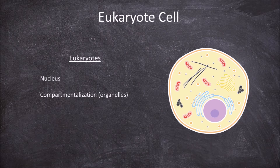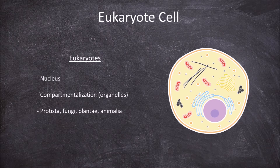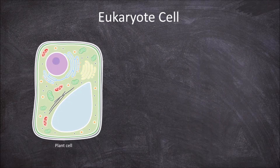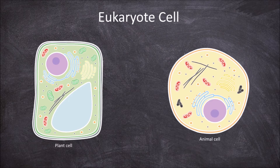Eukaryotes include members of the four domains: protista, fungi, plantae and animalia. We are going to look specifically at the typical structure of a plant and animal cell to look at the structure and function of a eukaryotic cell.